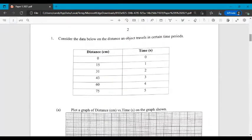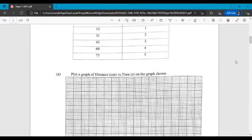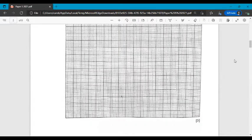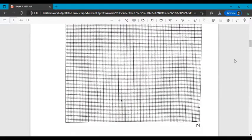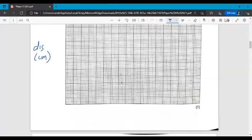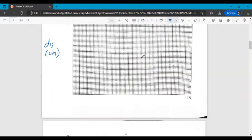So question number one. Consider the data below on the distance an object travels in certain time periods. So clearly we're going to plot a distance time graph. Time is going to be on our x axis. And distance is going to be on our y. Y is the vertical and x is the horizontal.